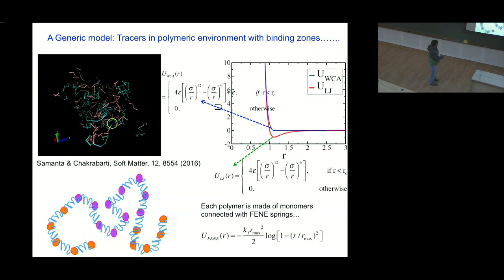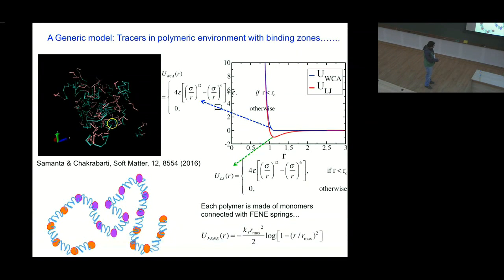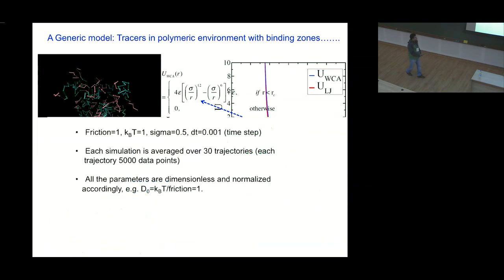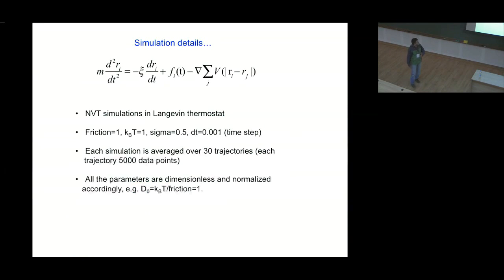The polymer is modeled such that internal monomers — from bead number 6 to bead 15, shown in purple — are sticky to the tracer. This interaction between the tracer and internal monomers is modeled with a Lennard-Jones potential shown in red, where epsilon is my stickiness parameter. The rest of the polymer is repulsive to the tracer, and the polymers are also repulsive to each other. Only the tracer sticks to the internal part of the polymer. We carried out Langevin simulations with inertia and averaged results over many trajectories.